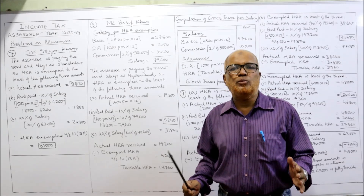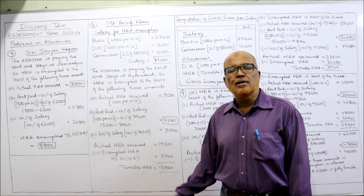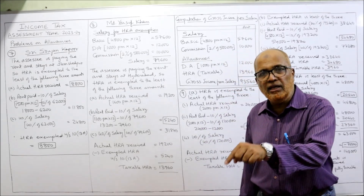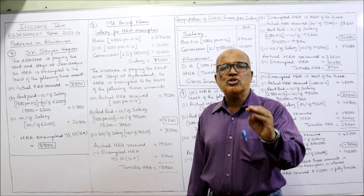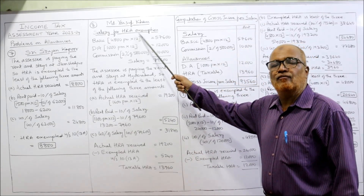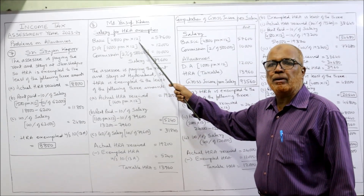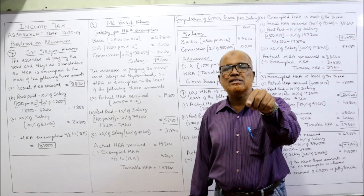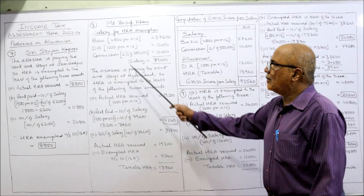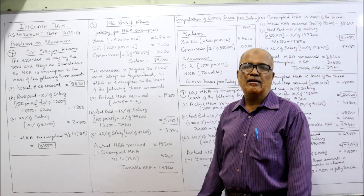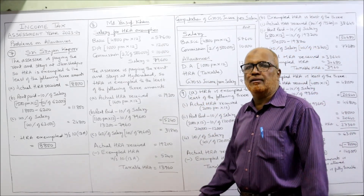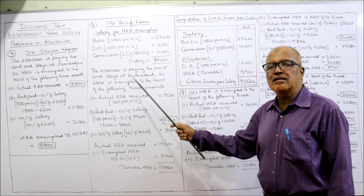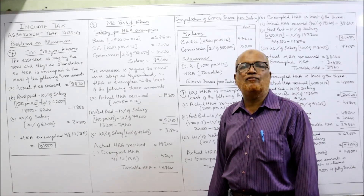Always keep running notes — a notebook, calculator, and pen ready while watching. Salary for HRA exemption means: basic pay + DA (if entering for retirement benefit) + commission (if fixed percentage on turnover). Here both conditions apply. Basic ₹4,800 × 12 = ₹57,600; DA ₹1,000 × 12 = ₹12,000; commission 2% of ₹5,00,000 = ₹10,000. Total salary = ₹79,600. Hyderabad is other town, so 40% applies.